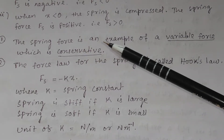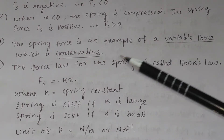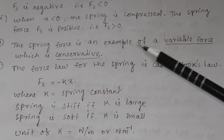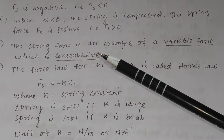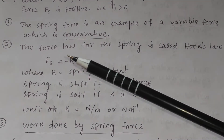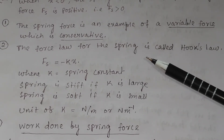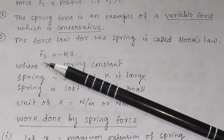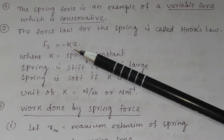The spring force is an example of a variable force which is also conservative. The force law for the spring is called Hooke's law, and the spring force fs is equal to minus kx.